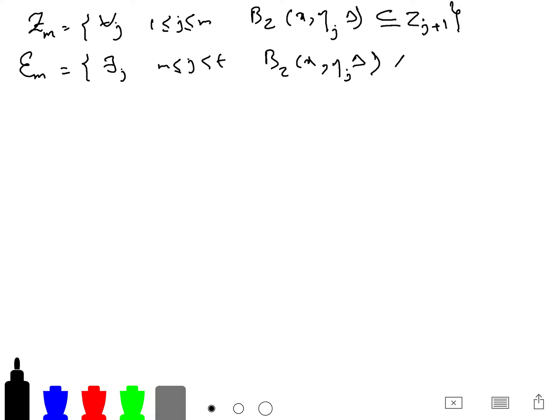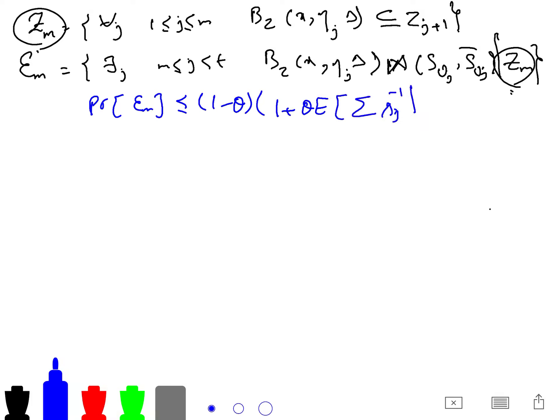This means that this symbol means that it has intersections with both SVJ and SVJ complement conditioned on the event ZM that I defined here. So we want to prove that the probability that KC_M is less than 1 minus theta, 1 plus theta expectation of KC_{J-1} conditioned on ZM. And why is it important?